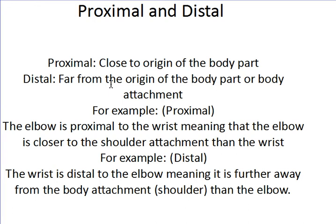You can only use proximal and distal on the same limb. You can't say is the wrist distal or proximal to the thigh because they're not attached to the same part of the body — arm on arm, leg on leg. For example, the elbow is proximal to the wrist, meaning the elbow is closer to the shoulder attachment than the wrist. Hold your arm out and look at your elbow — it's closer to your shoulder than the wrist is, so that means it's proximal.